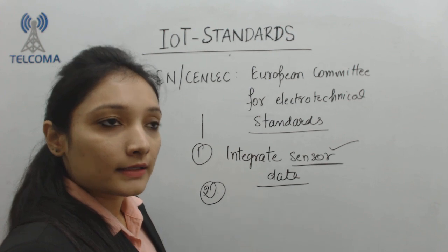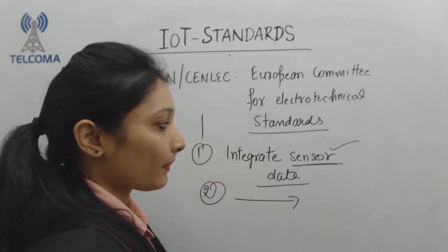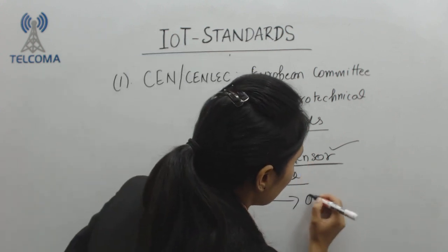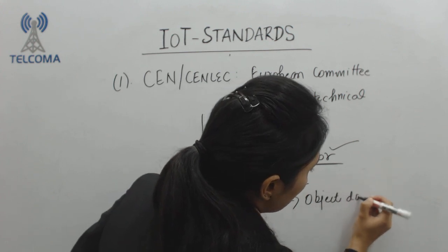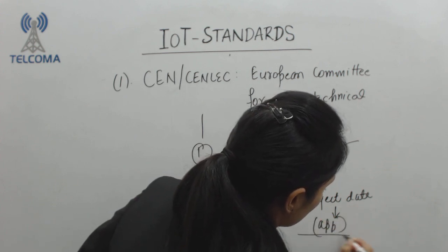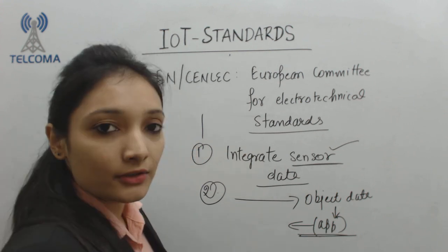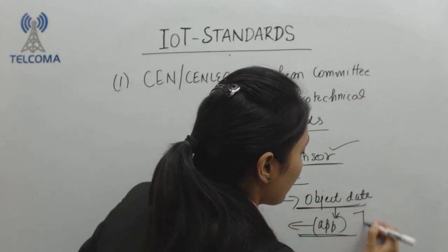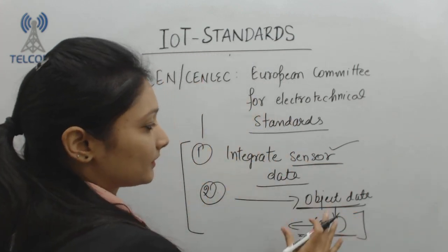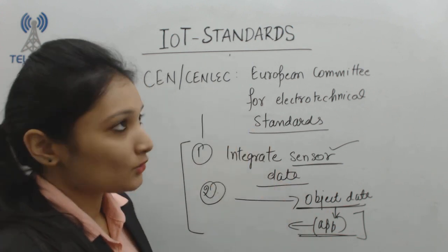CENELEC also works for the integration of data concepts and object data concepts with applications, so that efficiency is increased. This means integrating sensor data and object data concepts into applications like vehicle control or traffic control. This integration work is commissioned by the technical committee of this system.